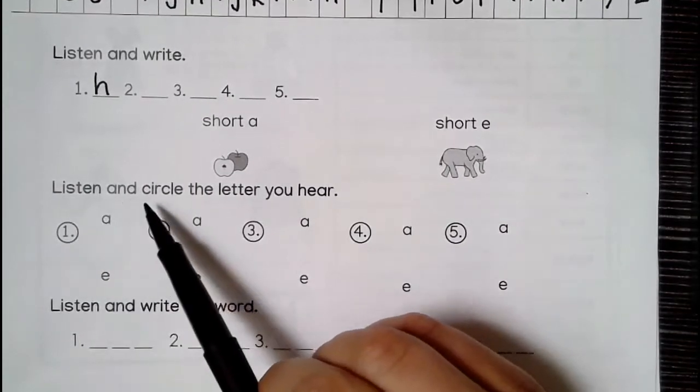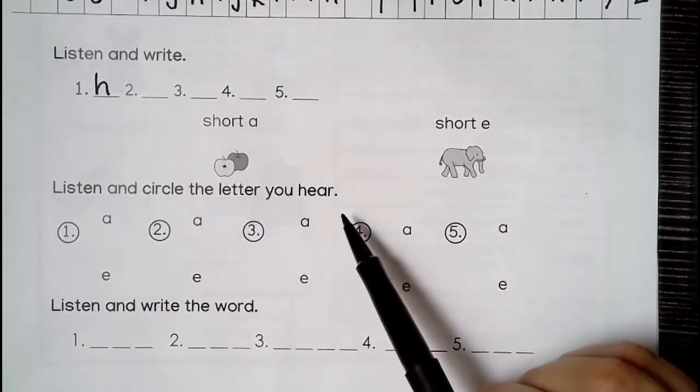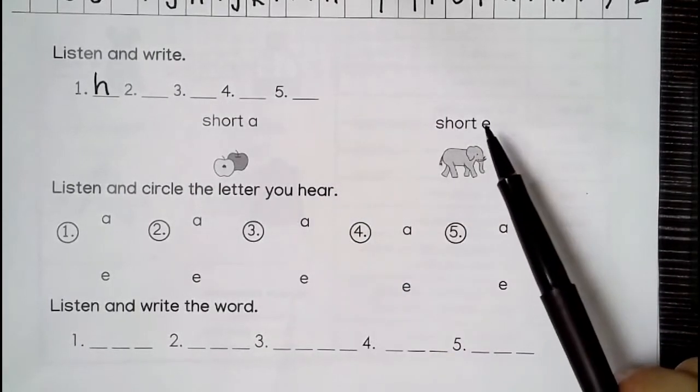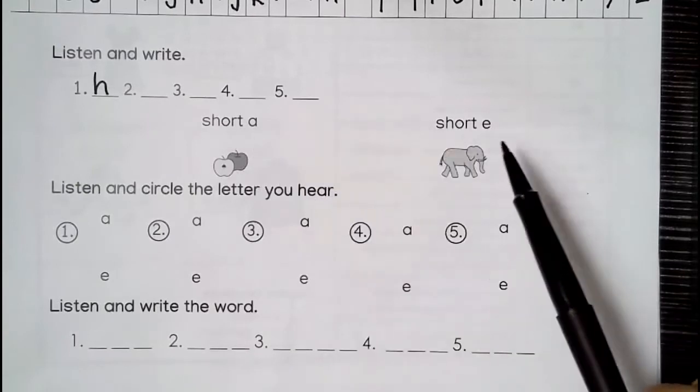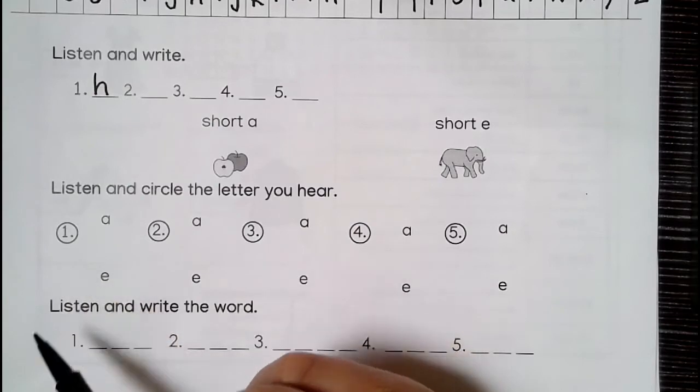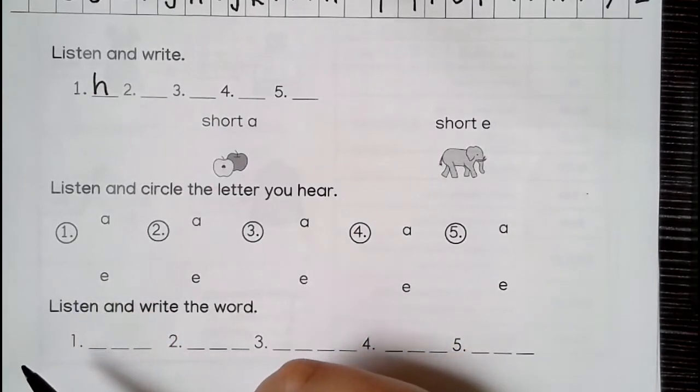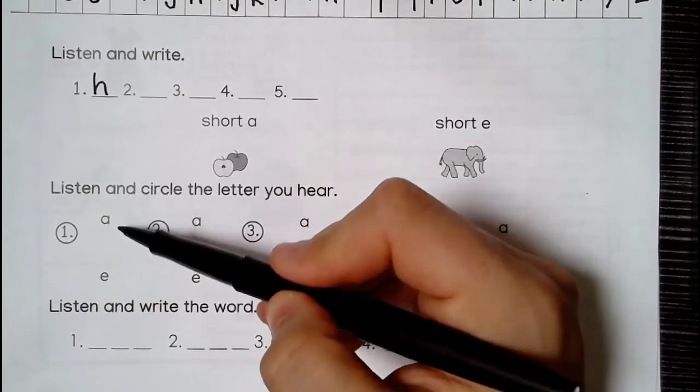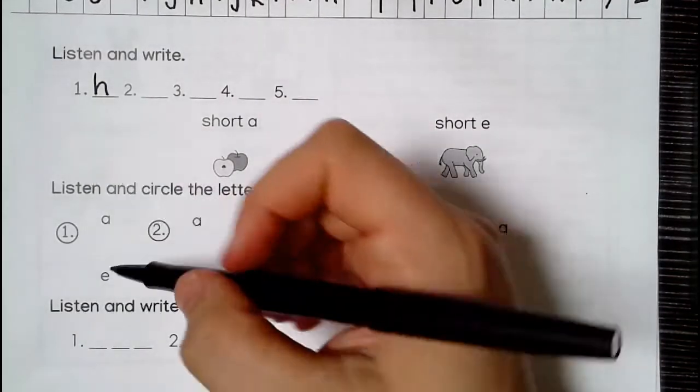Listen and circle the letter you hear. Again, A. A. A. Eh. Number one. A. A. It's an A or E. Up or down. A.